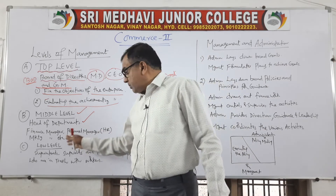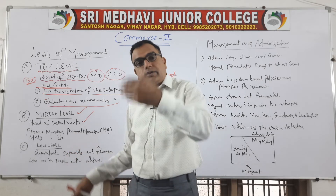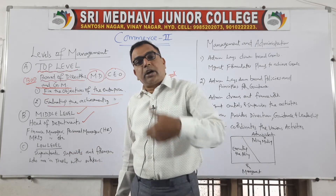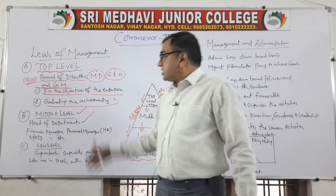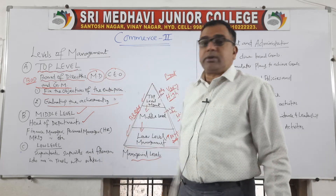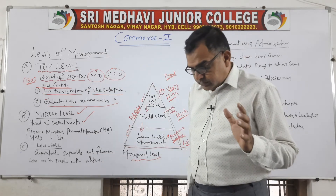These lower level people have direct contact with the executors — direct contact with the workers. So these three levels of management exist in any organization.